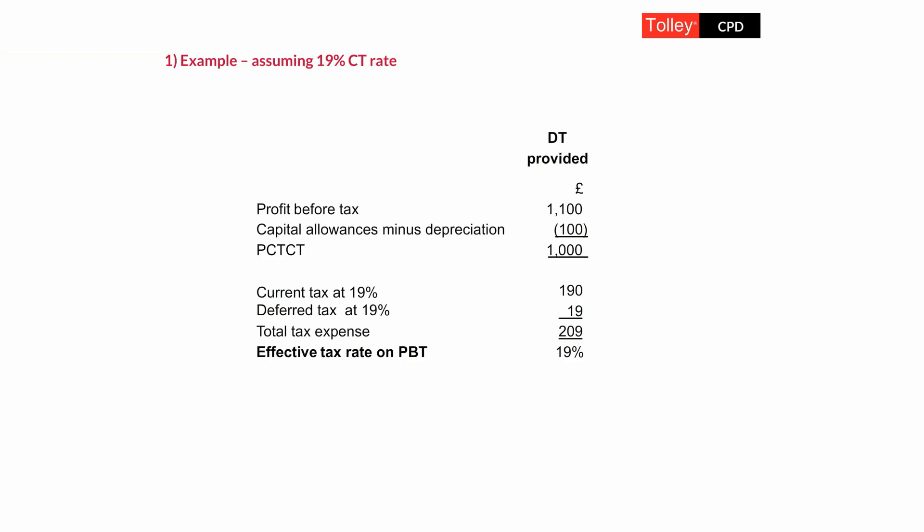Assume a 19% corporation tax rate throughout, and a fairly simple company with a profit before tax, some depreciation, and some capital allowances. The accounting profit for the year is $1,100, but the tax profit is only $1,000. If we book deferred tax, the current tax charge on taxable profit of $1,000 is $190, plus deferred tax on the extra timing difference of $100 gives a deferred tax expense of $19, totalling $209. As a percentage of the accounting profit of $1,100, the $209 tax expense represents an effective rate of 19% — the statutory rate for that period.